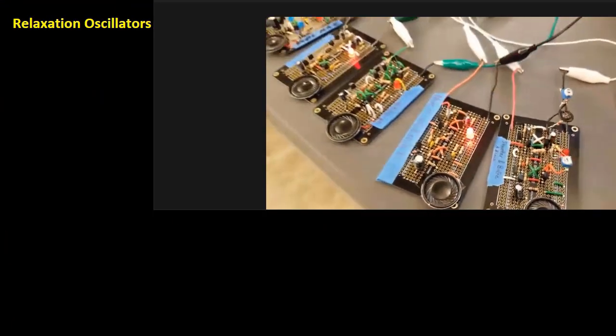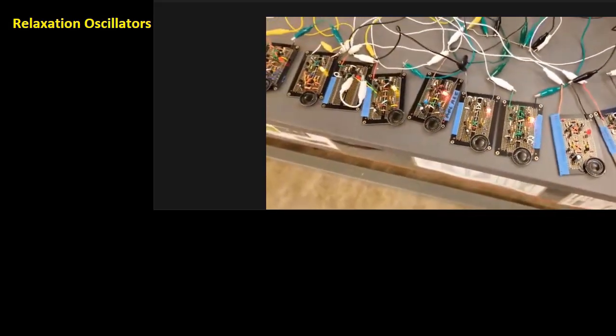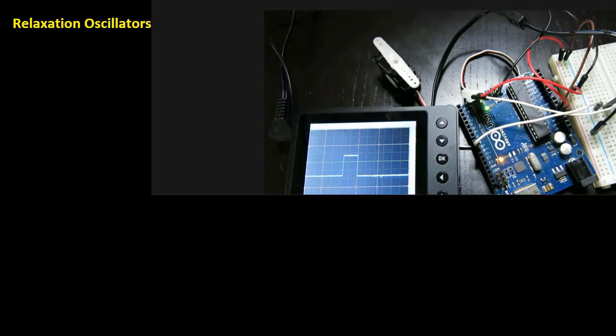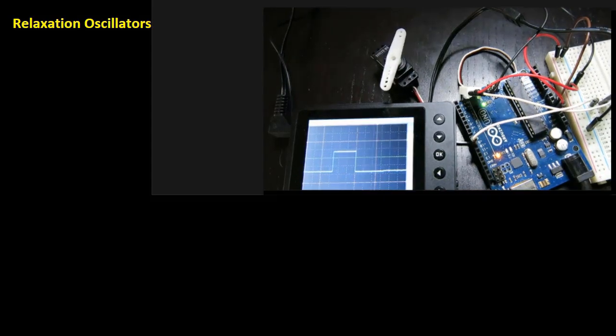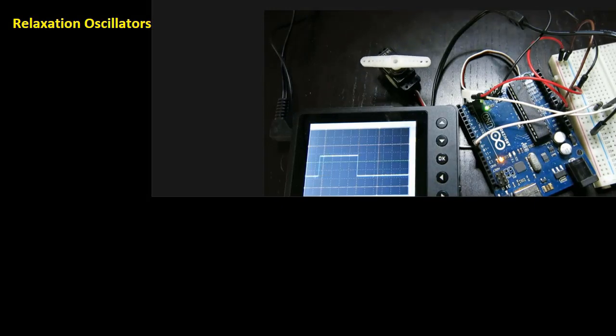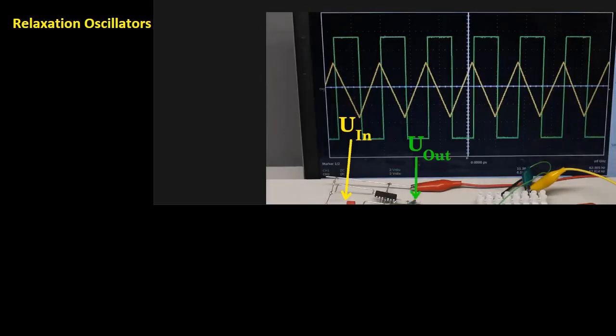In practically every electronic instrument, there is an oscillator of some sort. The task of the oscillator is to generate a repetitive waveform of desired shape, frequency, and amplitude that can be used to drive other circuits.